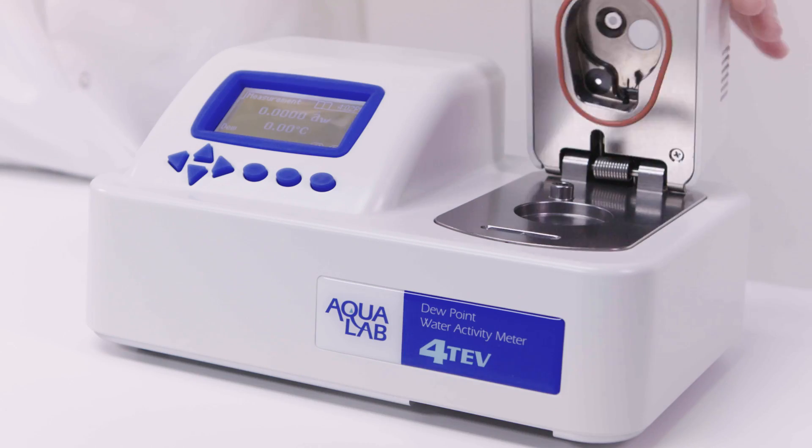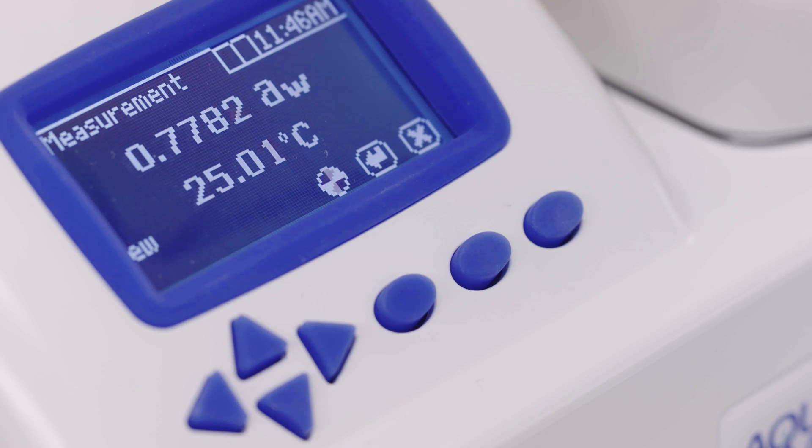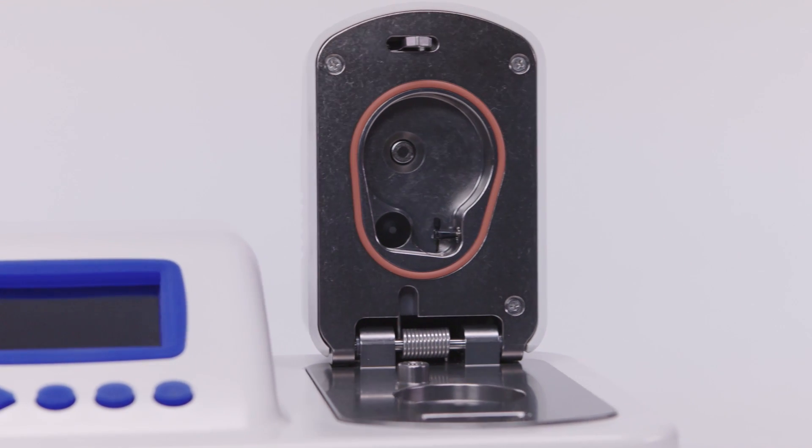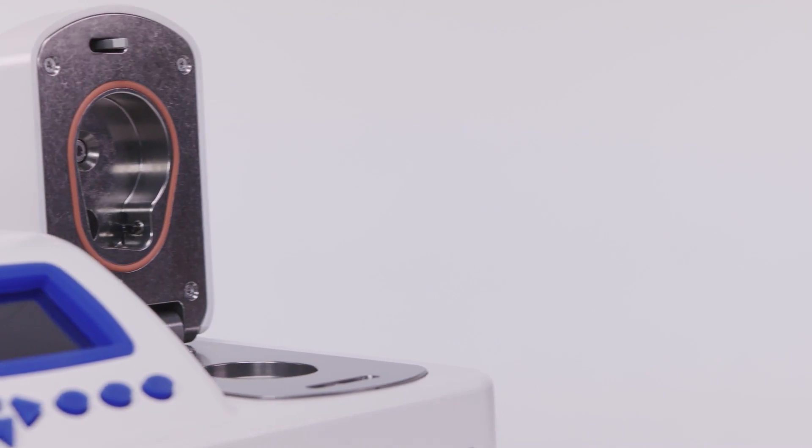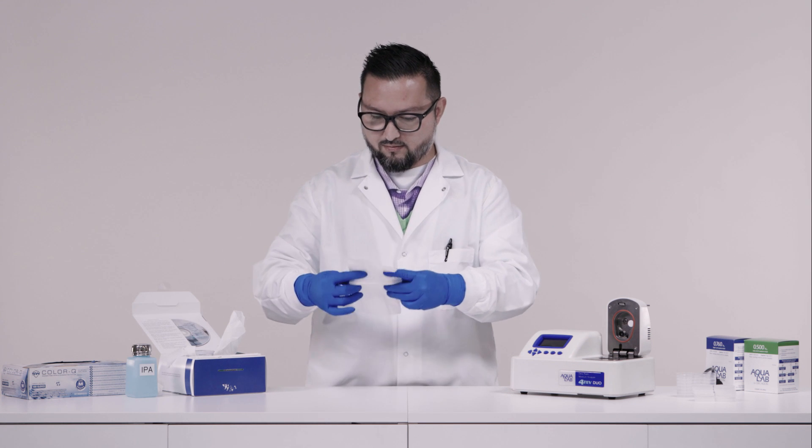Cleaning the instrument. Contaminants inside the Aqualab sample chamber cause inaccurate readings and long read times. Contamination may or may not be visible. Check for contamination by verifying your instrument with standards daily or before each shift. If your verification standards read out of spec, the issue is almost always chamber contamination. Follow these cleaning steps and retest the instrument to resolve the problem.